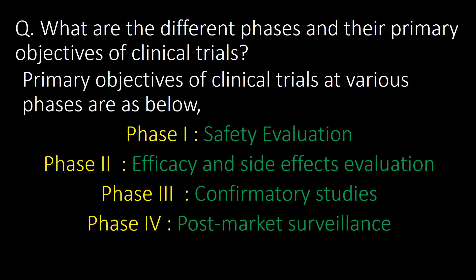What are the different phases and their primary objectives of clinical trials? Phase 1 is for safety evaluation. Phase 2 is for efficacy and side effects evaluation. Phase 3 is for confirmative studies, and Phase 4 is for post-market surveillance.